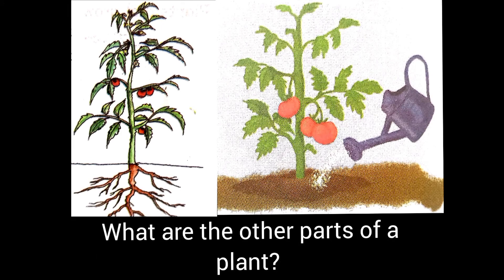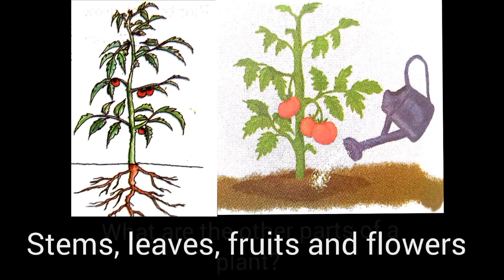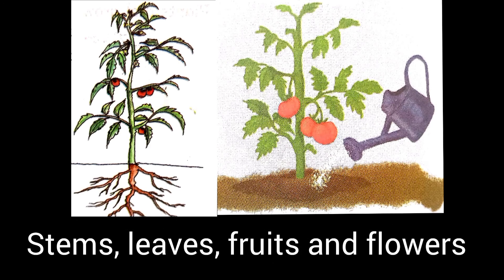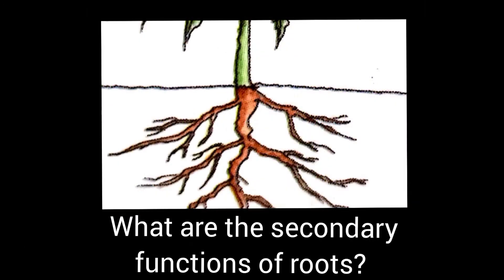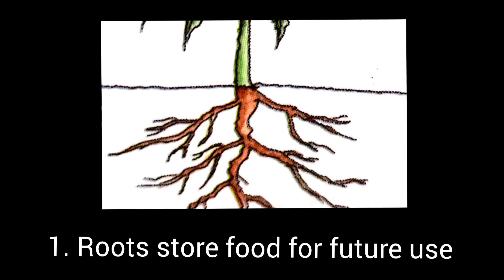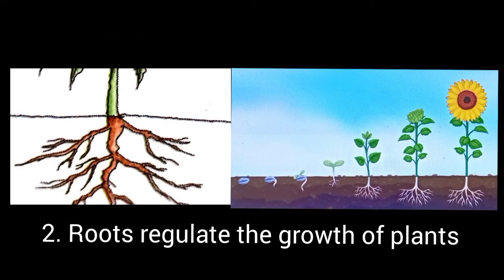What are the other parts of the plant? Yes, they are stems, leaves, fruits, and flowers. Then children, what are the secondary functions of roots? Yes, roots store food for future use and they regulate the growth of the plants.